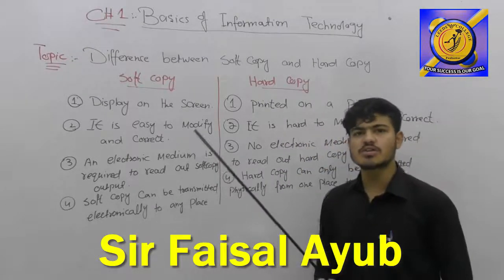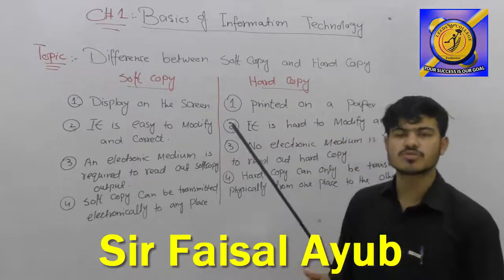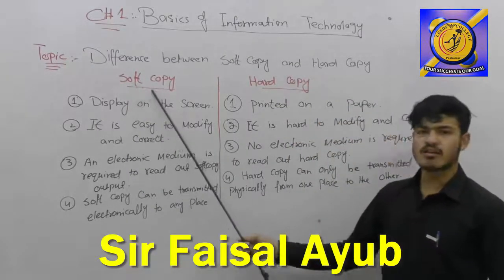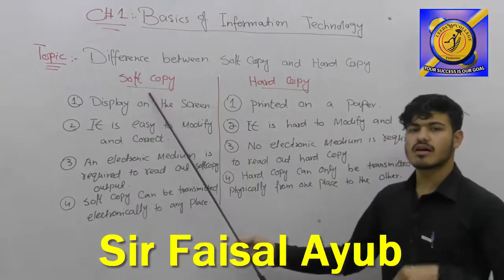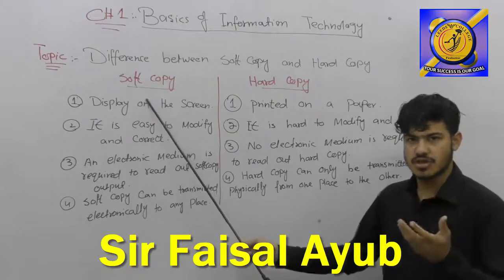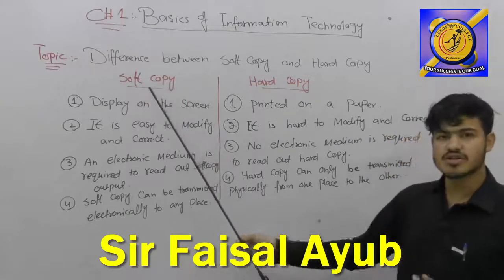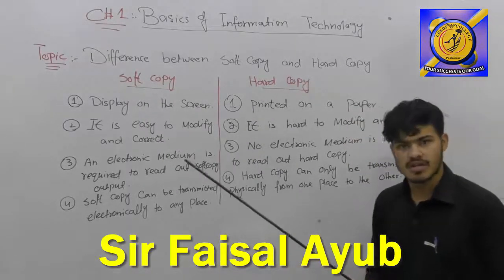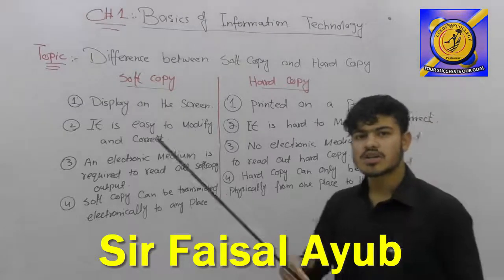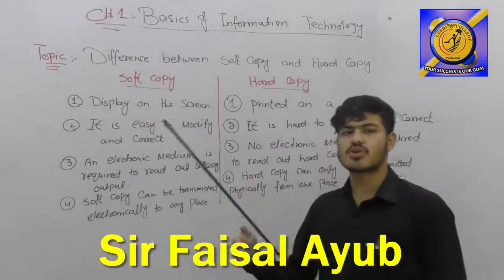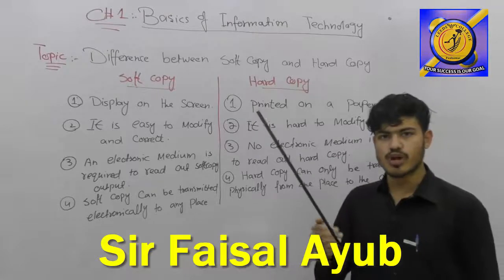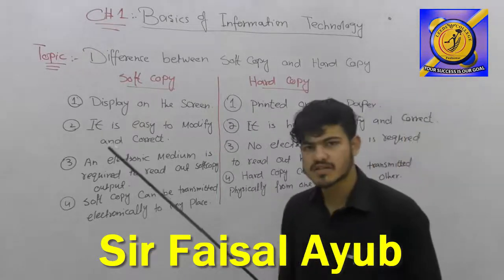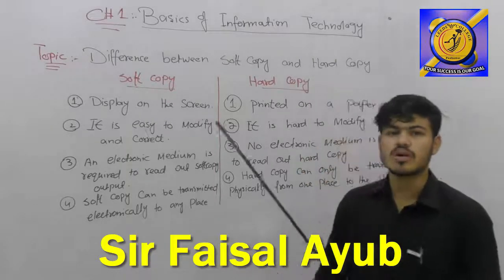Hard copy means something you can touch — a tangible item like a piece of paper. Soft copy comes from a computer and is not tangible. Hard copy is a tangible output — for example, when you print on a piece of paper, that printed output is your hard copy.